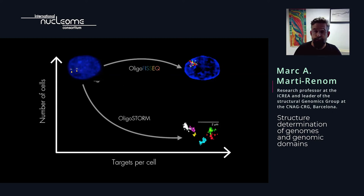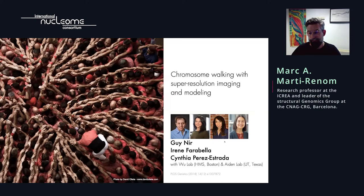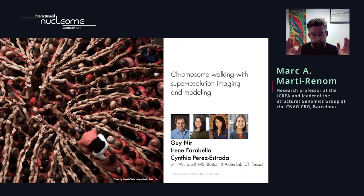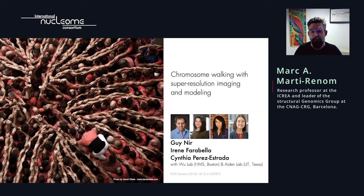Let me tell you exactly who did the work. OligoStorm was carried out by Guy, Irene, and Cynthia. Guy is from the Wu lab, Irene is from our lab, and Cynthia Perez-Estad is from the Lieberman-Aiden lab. The objective was to develop a technology that would allow us to do what is called chromosome walking using super-resolution imaging — to take a small piece of the chromosome and figure out its actual shape and path within the nucleus across a number of cells. It is not high throughput, but it works nicely.